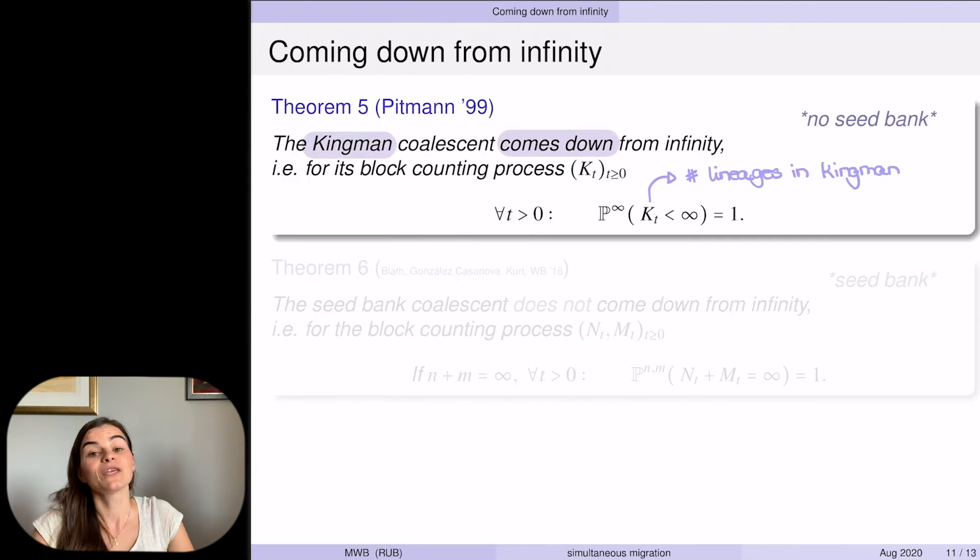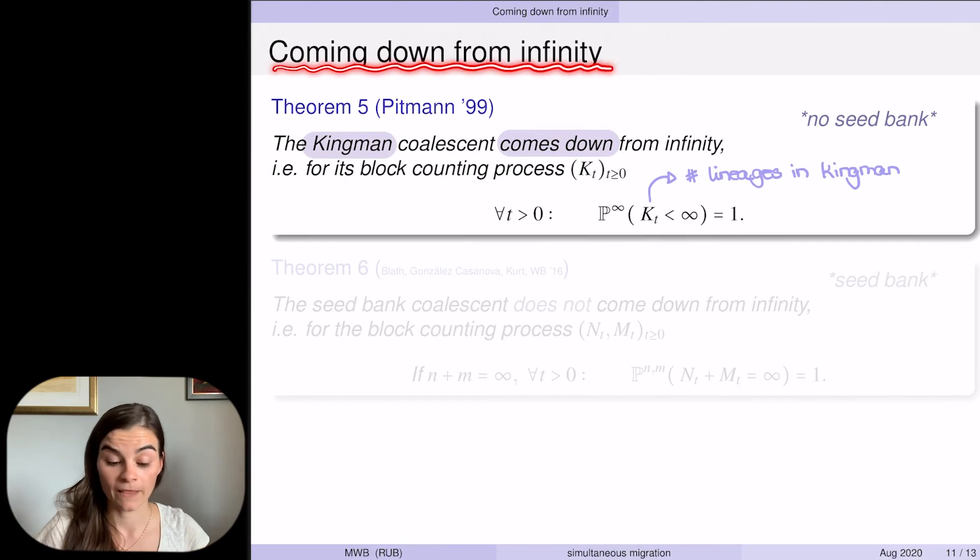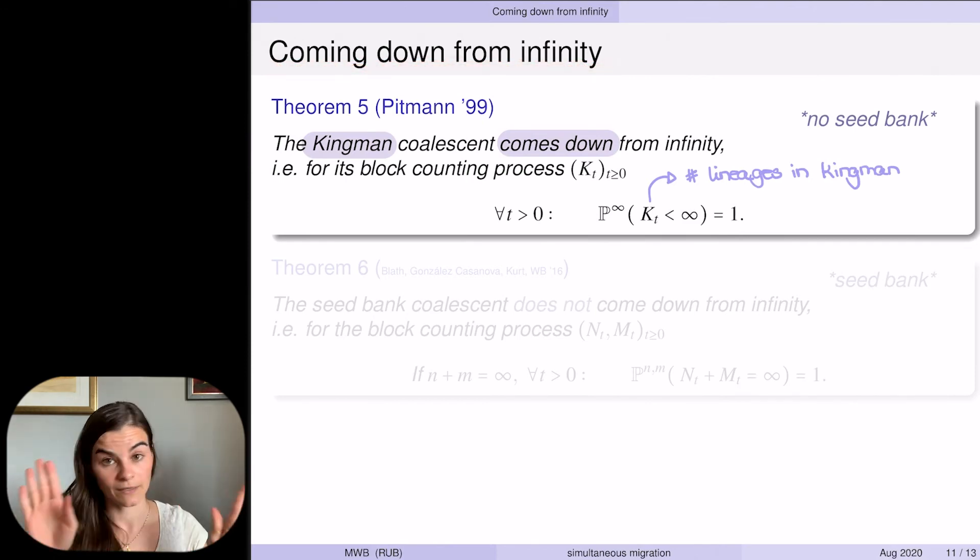Now that we have the object, let's look at their properties, more specifically at the property of coming down from infinity. The Kingman coalescent, which is the one with no seed bank at all, is known to come down from infinity, which means that if you start that coalescent with an infinite amount of individuals, at any positive time t you will be finite almost surely.